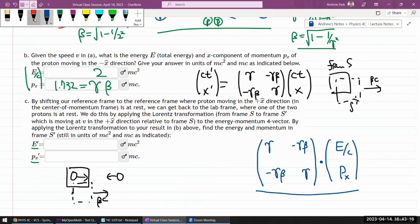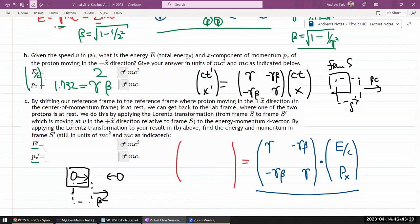When you do this matrix multiplication, for the first element you get gamma times E over c minus gamma beta px. And for the second row I get minus gamma beta E over c plus gamma times momentum.